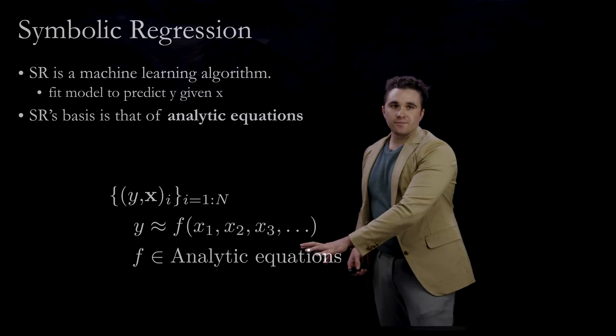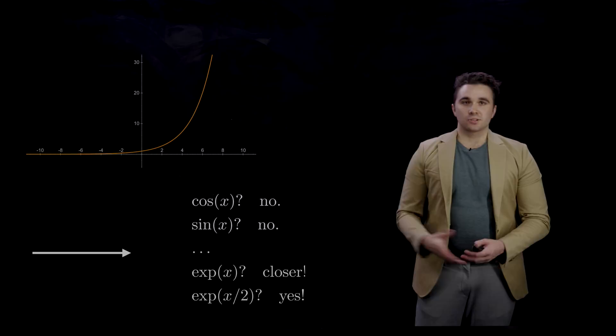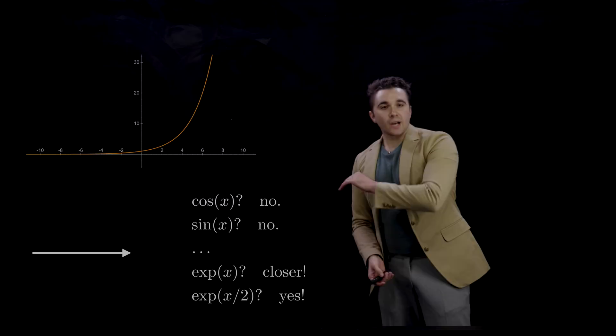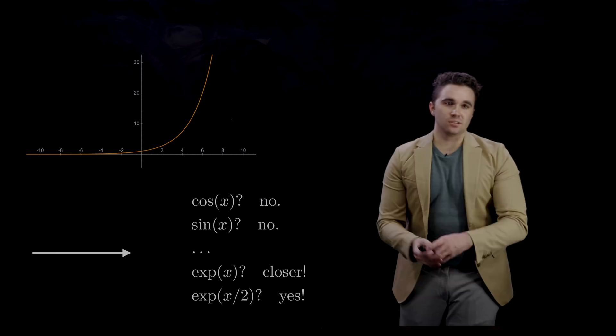If you have a curve where the x-axis is your input and y-axis is the output, in symbolic regression you try different functional forms: does cosine fit? No. Does sine fit? No. You keep trying — you get to exponential of x, which is closer, and then you reward that expression and start mutating it, eventually finding exp(x/2), which is the right expression.